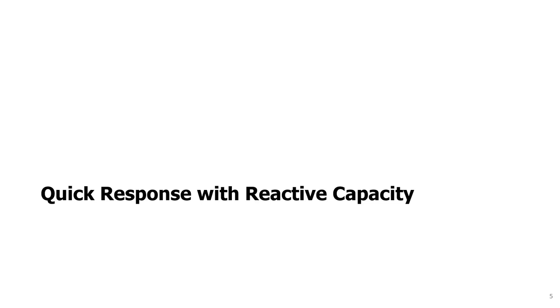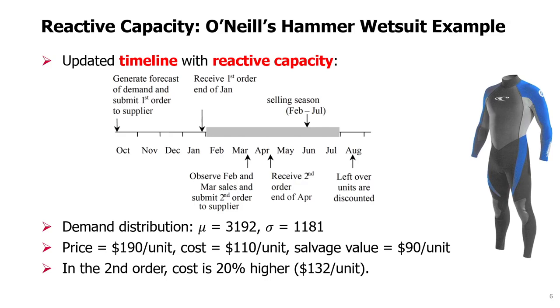Quick response with reactive capacity. An intermediate solution between the two extremes of make-to-stock, single order, and make-to-order — where we only produce or deliver after demand has occurred — is to use reactive capacity.